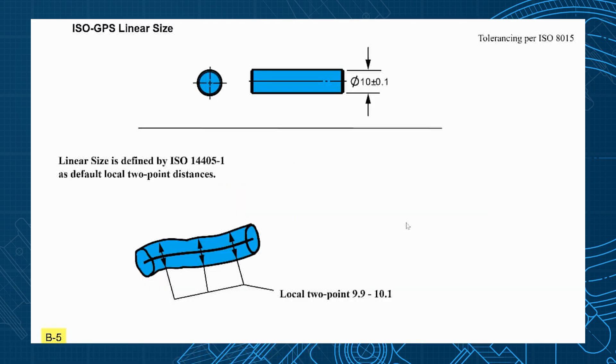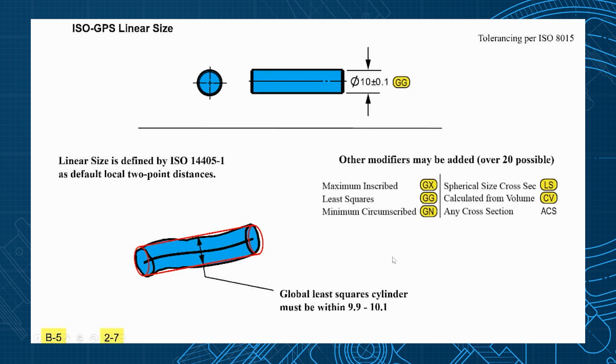Now ISO does have a little bit more that you can go into with size. So here we have 10 plus or minus 0.1 and we know the default there is going to be local 9.9 to 10.1. But ISO has a lot of extra modifiers that you can add here if you'd like.